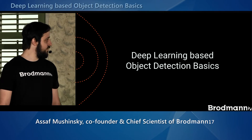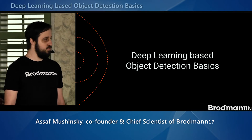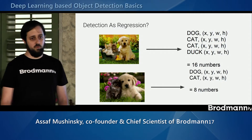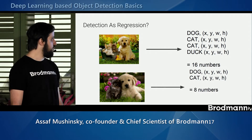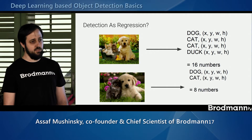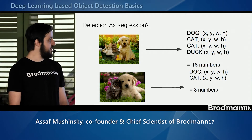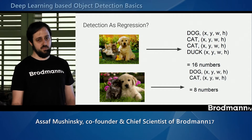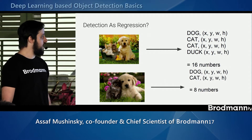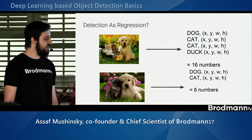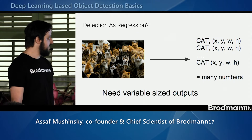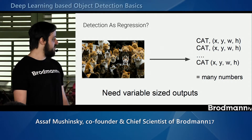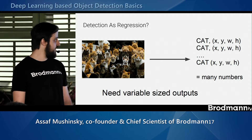Now we'll talk about deep learning object detection and we'll start with more simple examples. So how do we perform object detection using CNN? The problem is that we can't really do this as a regression because every input image has a set of basically exact number of outputs. If we want to output the localization for all objects, it will vary as the number of objects in the image vary, and this can get very complex if we have many objects.